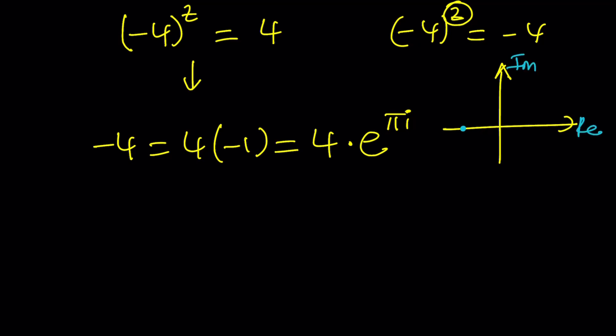right? Because that's a real number as well. And then its argument, the angle, is just going to be pi radians, right? This is negative 4, that's pi radians, and modulus is 4. Make sense?